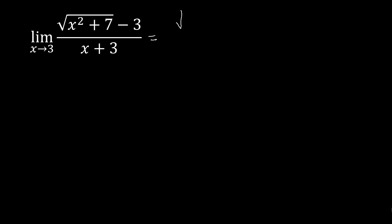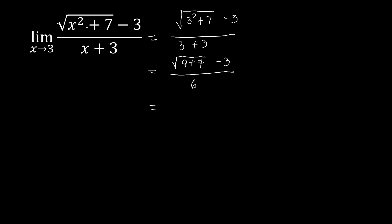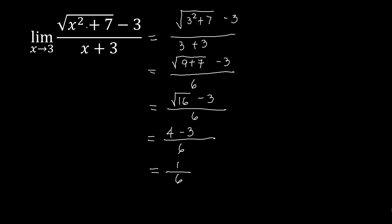Substituting x = 3: we get the square root of 3 squared plus 7, minus 3, over 3 plus 3. Simplifying: the square root of 9 plus 7, minus 3, over 6. That gives us the square root of 16, which is 4, minus 3, over 6. So 4 minus 3 is 1, over 6. Therefore the limit of that function as x approaches 3 is 1/6.